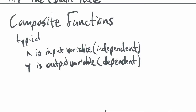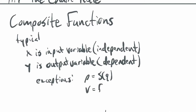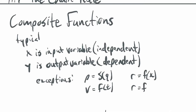We don't have to use x and y all the time. There are exceptions: supply and demand curves where q is input and p is output, velocity as a function of time, or revenue as a function of the number of widgets. We could say r equals f of w for widgets if we wanted to. There's no reason to use x necessarily.